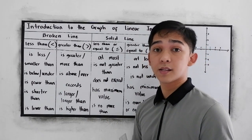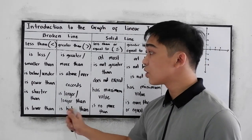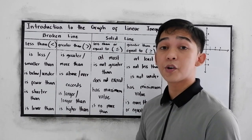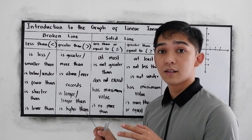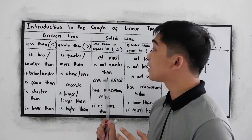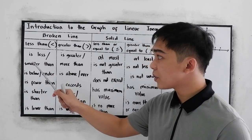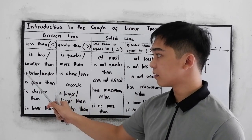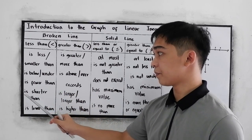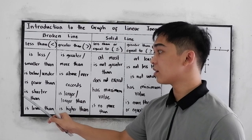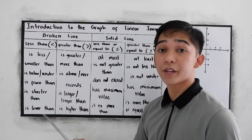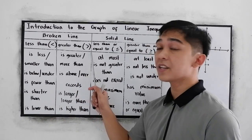And for the word problems, these are the things you need to know in order for you to write the linear inequalities. For the less than, we have is less or smaller than, is below or under, is fewer than, is shorter than, is lower than.